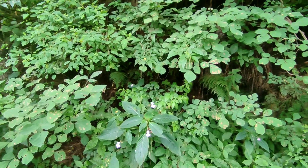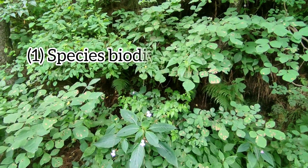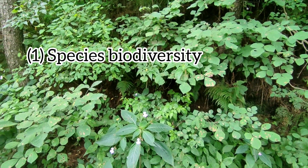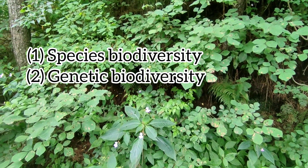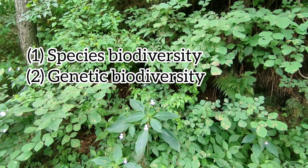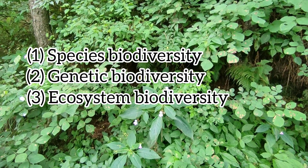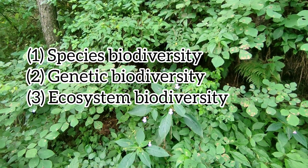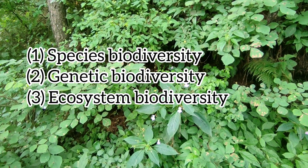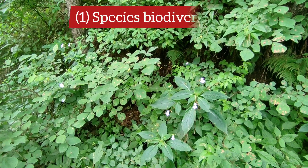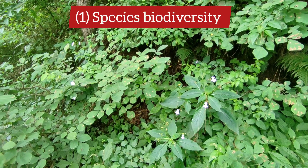Biodiversity is studied at three levels: number one, species biodiversity; number two, genetic biodiversity; number three, ecosystem biodiversity. First, species biodiversity — species biodiversity simply means the diversity of species.